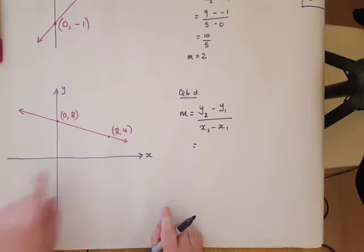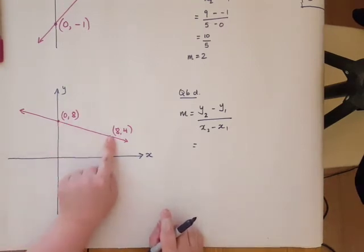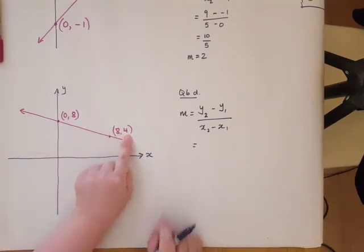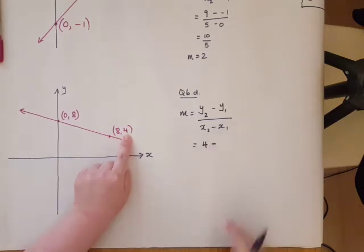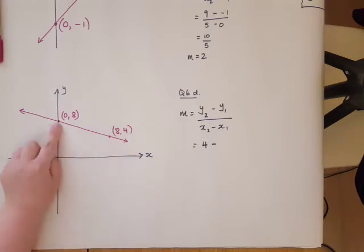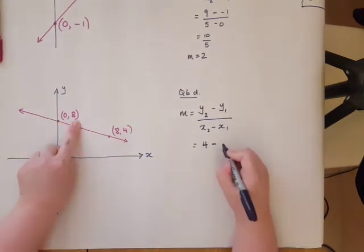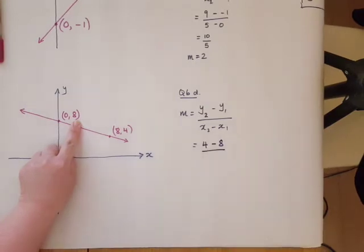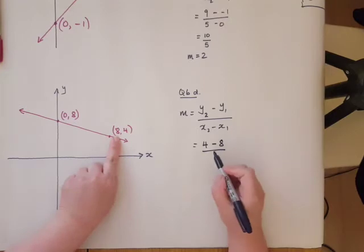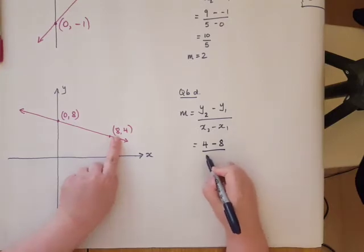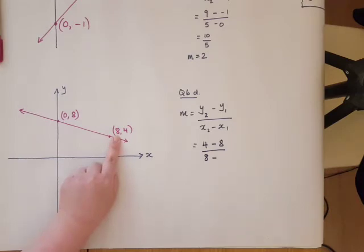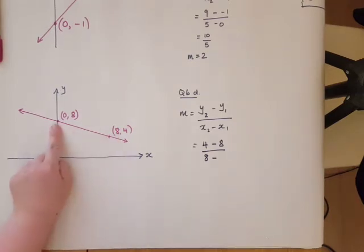So the second y value, so that's the second point, the y value is 4. First y value, so first point, the y value is 8, divided by x2, second point, the x value is 8, this 8 that I'm pointing to. And then our first x value, here's the first point, the x is 0.